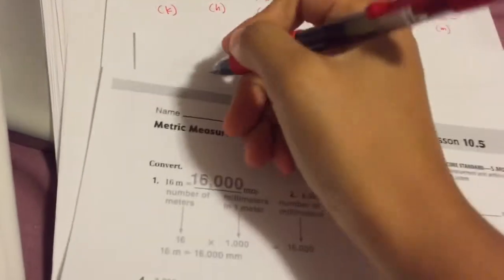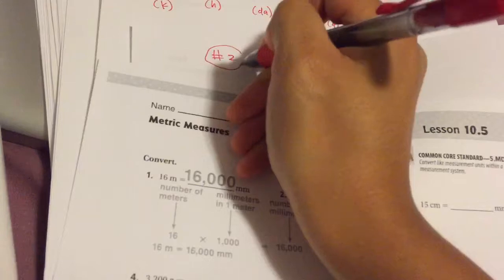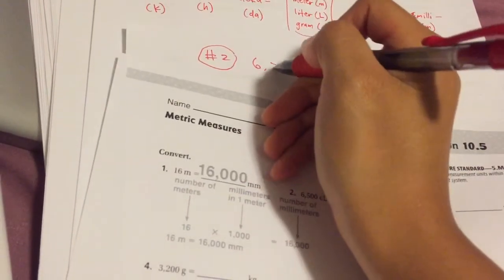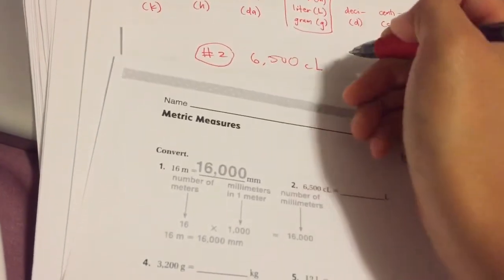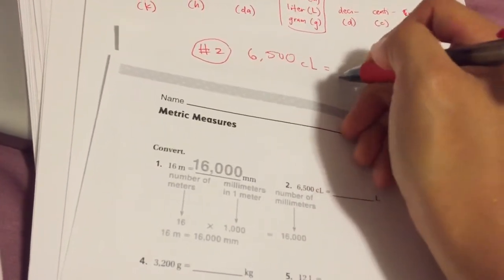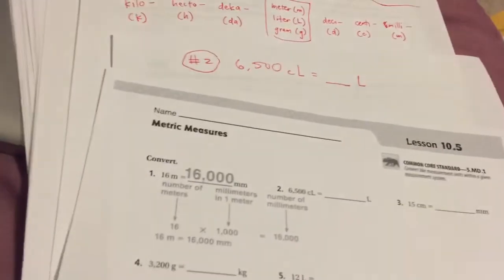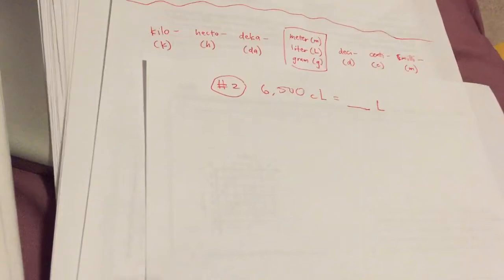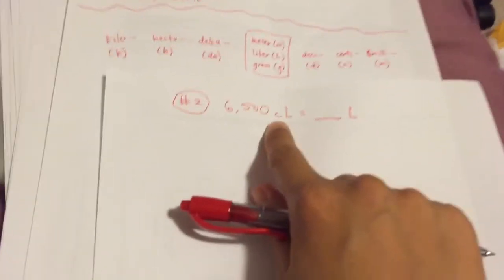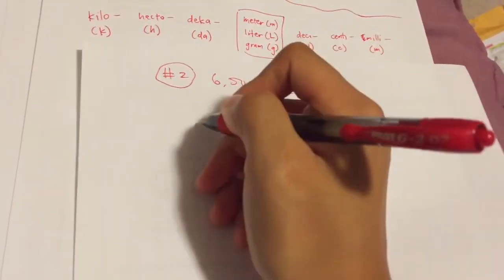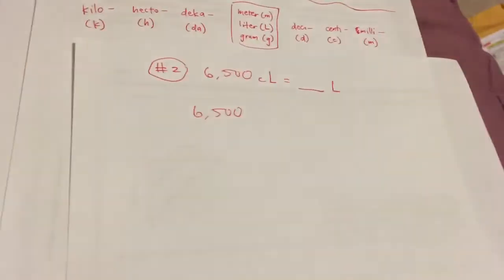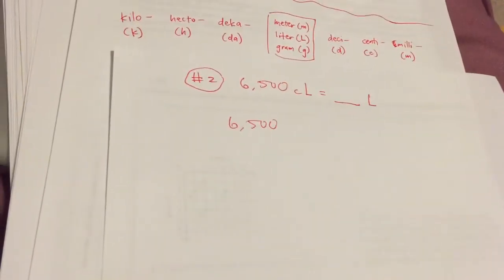Let's turn this paper over and start number two. Number two is asking for 6,500. Right now, we're just writing down the paper.